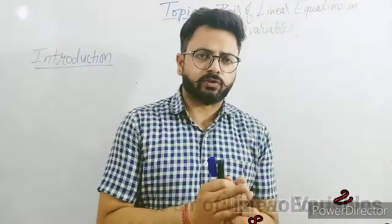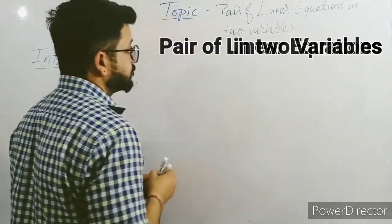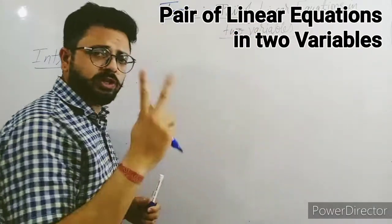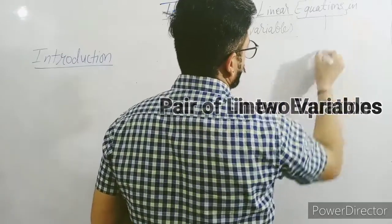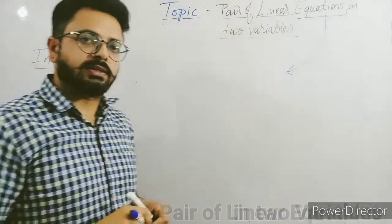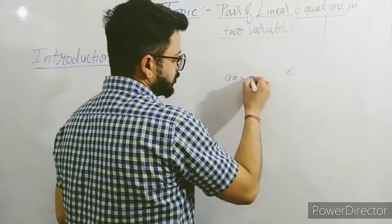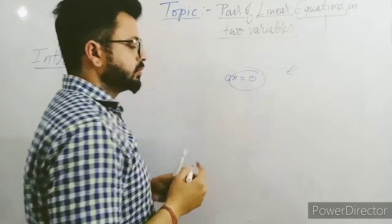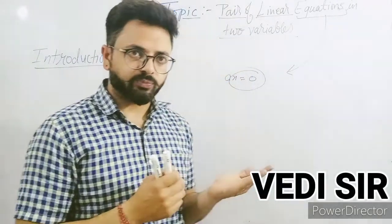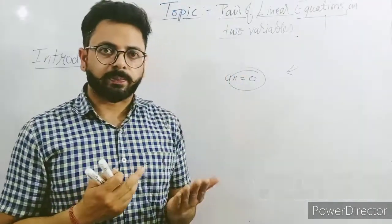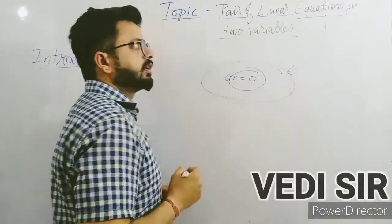So pair of linear equations — let's discuss the chapter name first. All of you know about this word 'pair.' Pair means always we are talking about two. Now, 'equation' — any algebraic equation which we are putting in the form like ax = 0, equating with zero or equating with any other algebraic expression — that complete expression we call an equation.